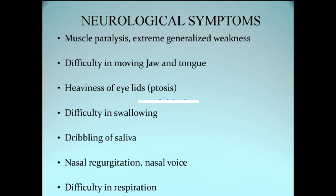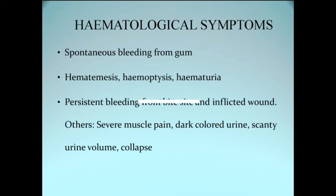General symptoms are classified based on venom type: neurological, hematological, or myotoxic. Neurological symptoms include paralysis — the person cannot move the jaw or tongue, eyelids droop (ptosis), saliva comes out, speech muscles are paralyzed, and ultimately respiratory muscles are involved causing difficulty in breathing. Hematological symptoms include spontaneous bleeding from gums and body orifices including hematemesis, hemoptysis, hematuria, persistent bleeding from the bite site, severe muscle pain, dark-colored urine, and scanty urine volume due to kidney involvement.